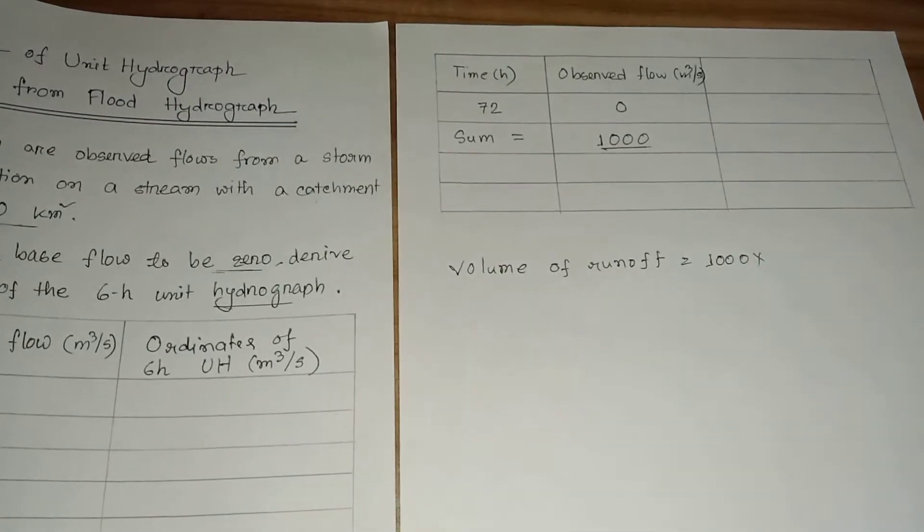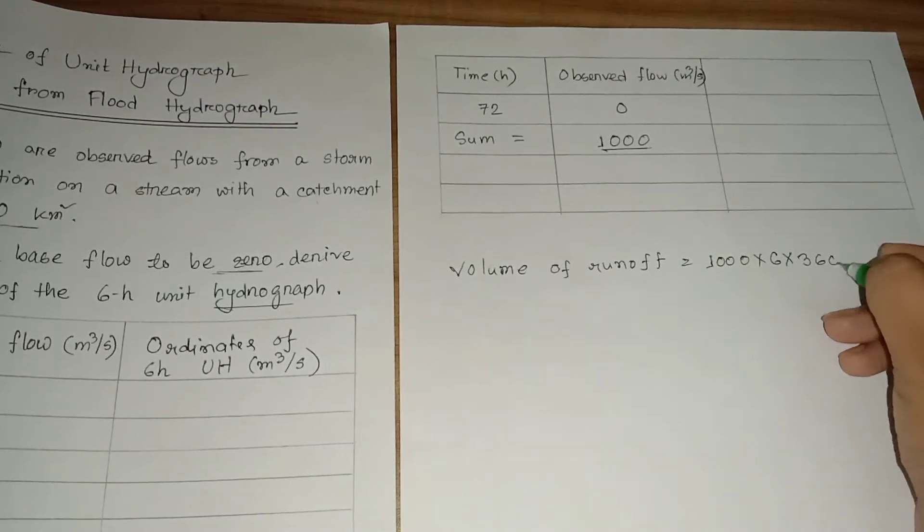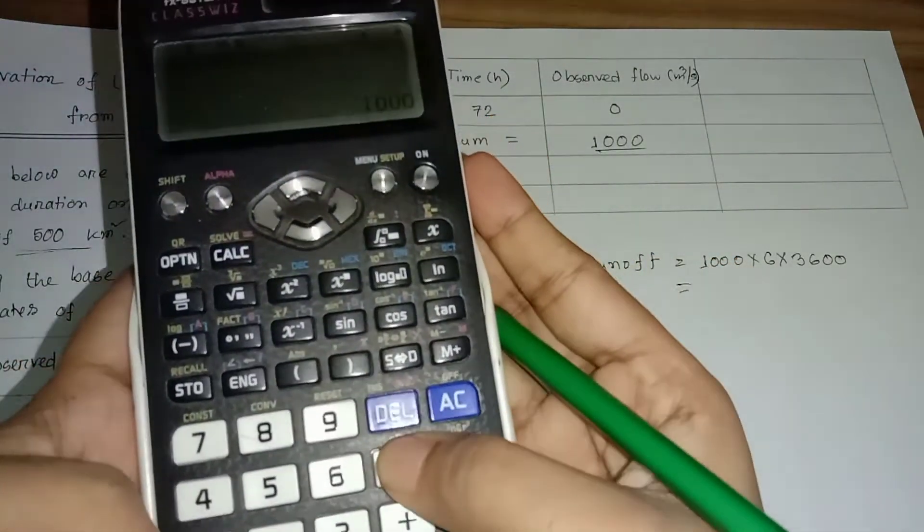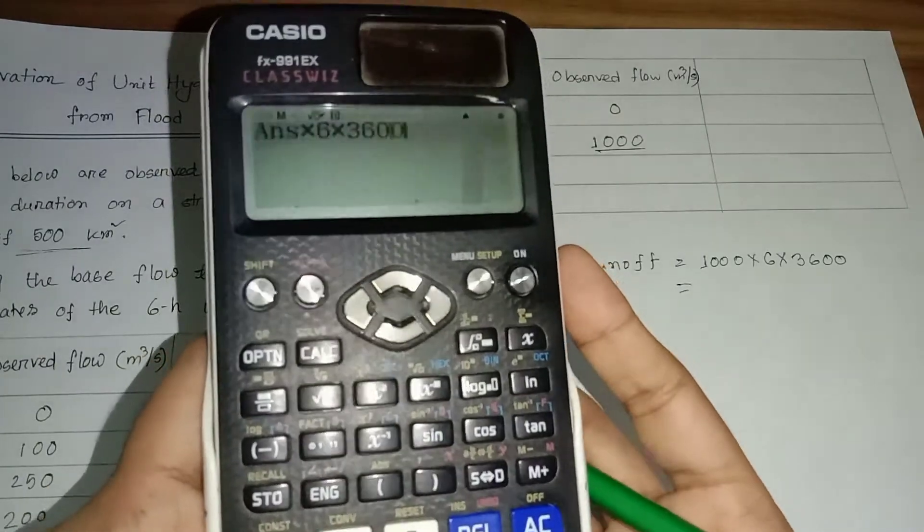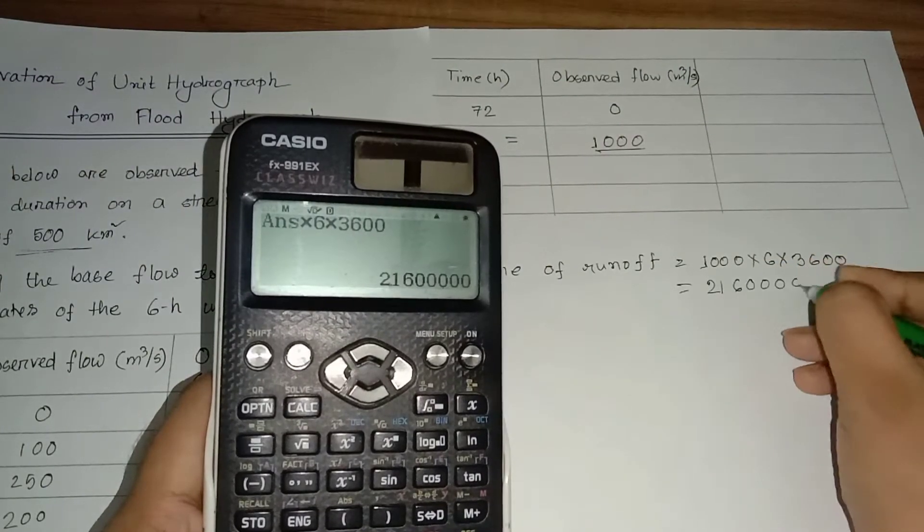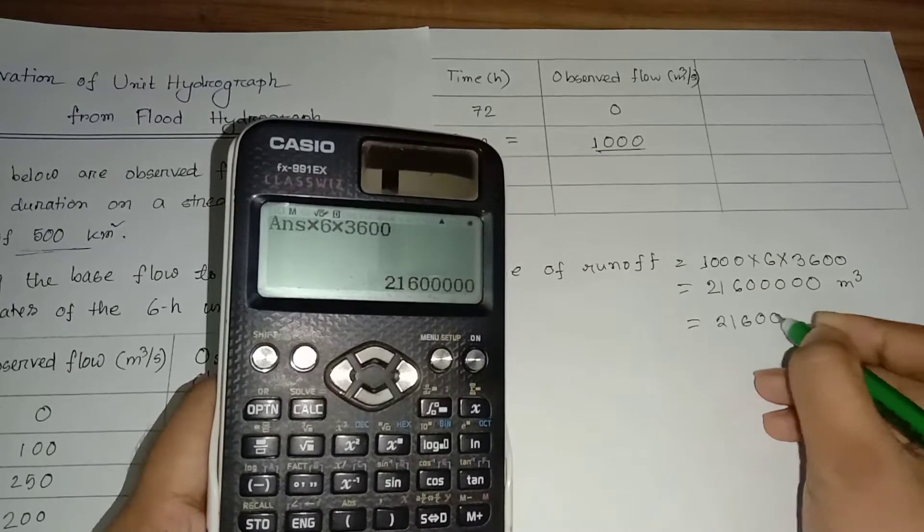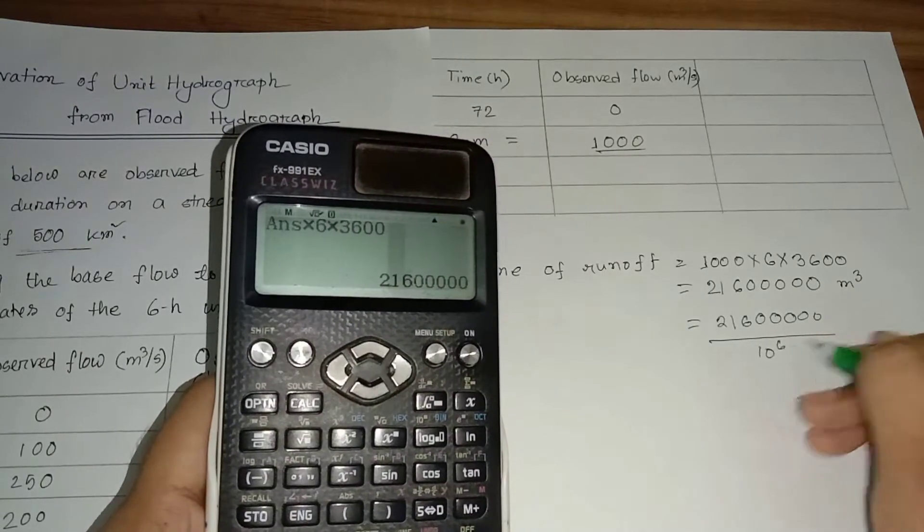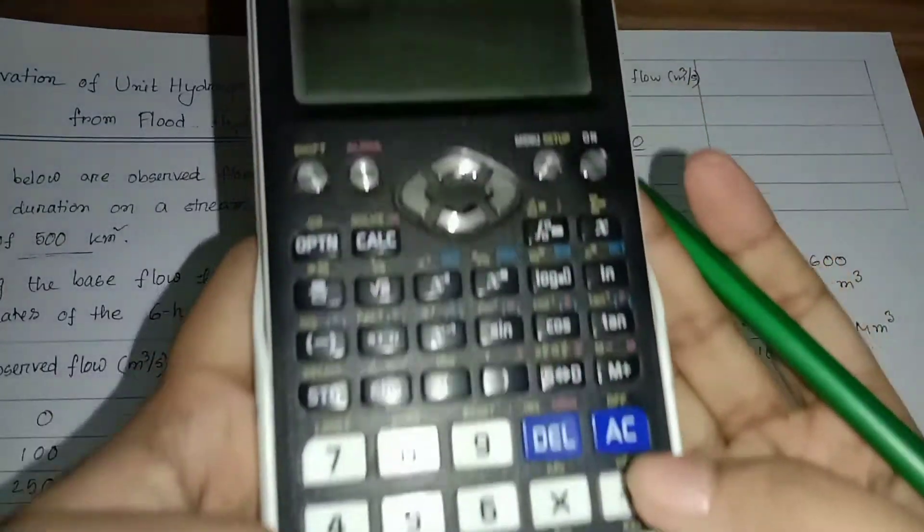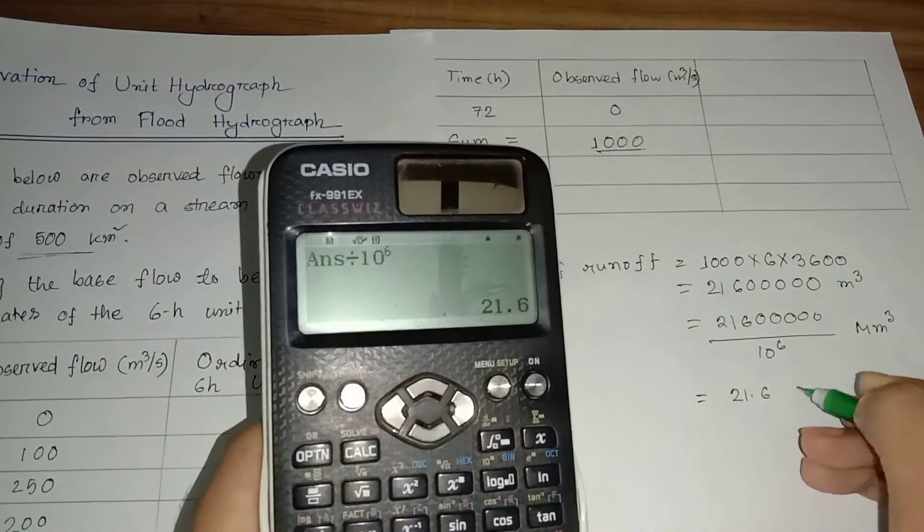Volume of runoff is equal to 1000 into 6 hour, that is the time difference, into 3600 seconds. So 1000 times 6 times 3600 equals 21,600,000 meter cube, which is 21.6 mega meter cube.